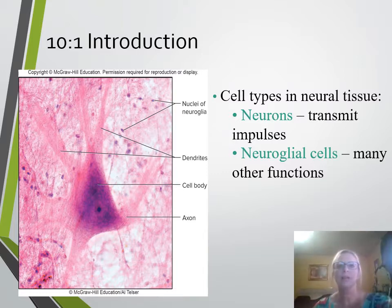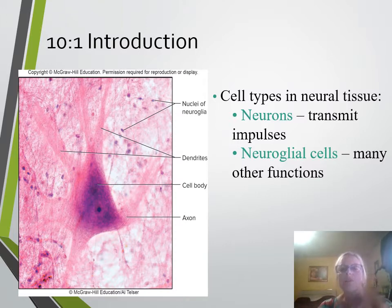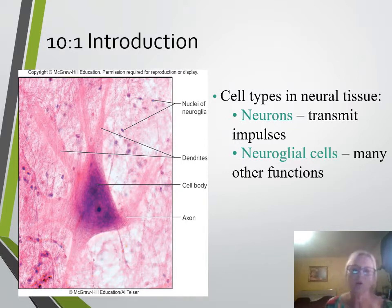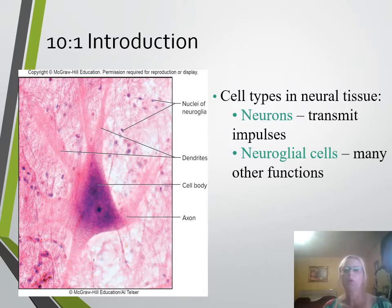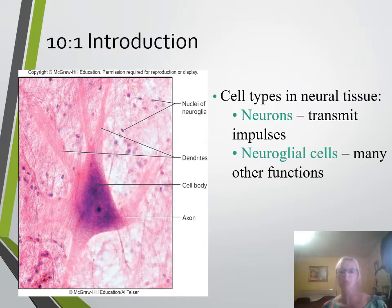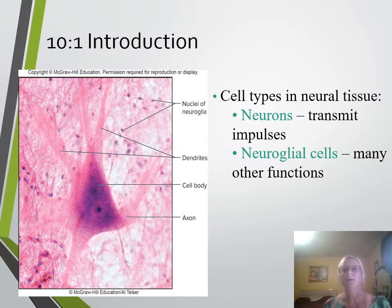We are looking at section 10-1, the introduction for the nervous system. The nervous system is basically the control center. We think of the nucleus as the control center for the cell — well, the nervous system is the control center for the whole body. It oversees everything that we do. It's a large network of cells that communicate, send and receive messages and information. It detects changes in the environment and responds to those changes, stimulating your muscles and glands to elicit a response.